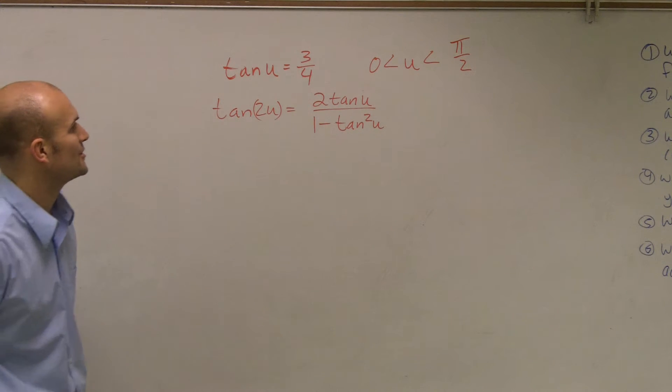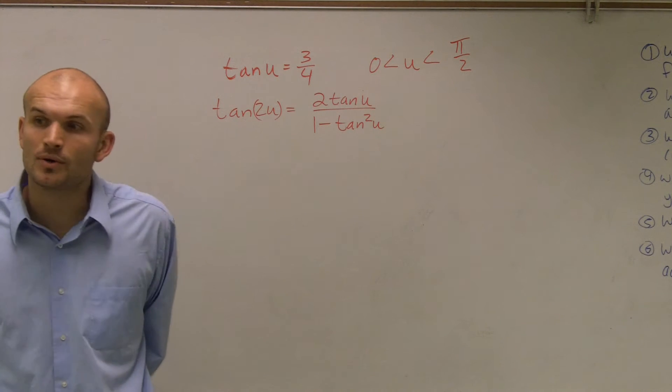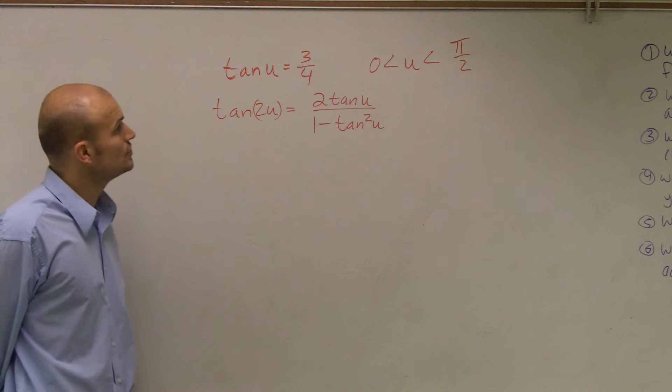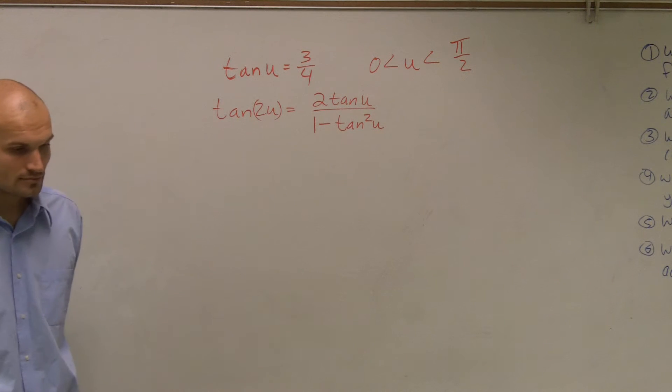So we have tangent of 2u equals 2 tangent of u over 1 minus tangent squared of u. Now, they say the tangent of my angle u is 3 fourths.